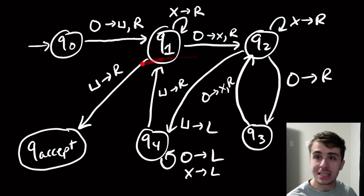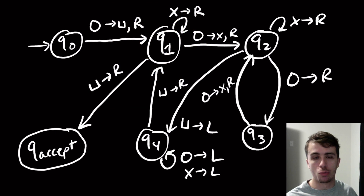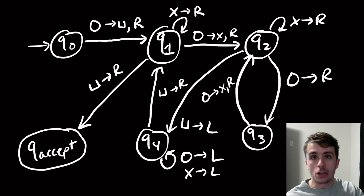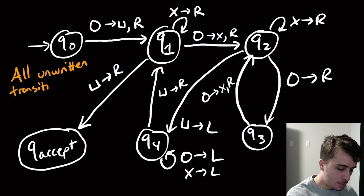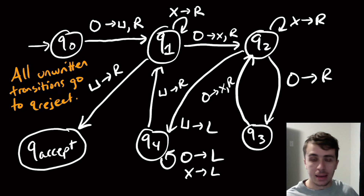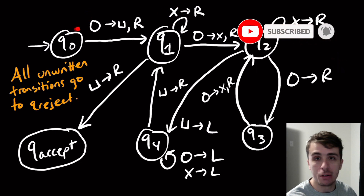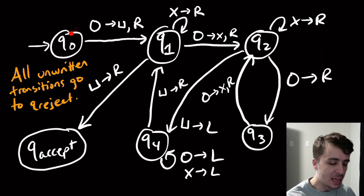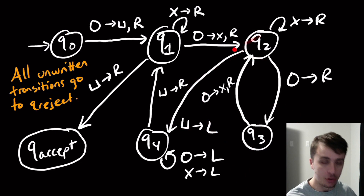You might wonder where the reject state is. We could put all transitions in explicitly, but that's complicated and not productive since all the other unwritten transitions are going to reject anyway. So the way to fix this is to say all unwritten transitions go to q_reject. For example, if we see an x from q0 that goes to the reject state, or if we have a blank in the first cell from q0 we go to reject as well.